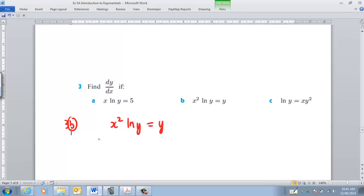So if I've got this here, I'm simply going to go the f dashed is 2x ln y. Then it's going to be plus x squared. Now the derivative of ln of y is 1 over y, isn't it? But because I'm differentiating a y term, I'll put a dy dx. So implicit differentiation, that's what we're doing. Over here, that would be simply 1 dy dx.